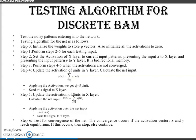Based on the training algorithm, weight is determined by means of which net input is calculated. That weight is used to calculate the net input, then the activation function is applied and the test pattern will be recognized. Step 0 is to initialize the weight to store p vectors. Also initialize all the activations to 0. That weight will be initialized. Then perform steps 2 to 6 for each testing input.